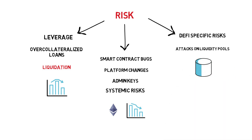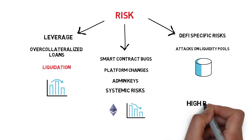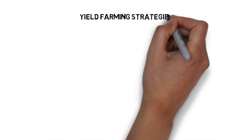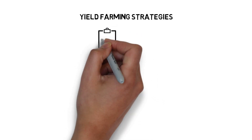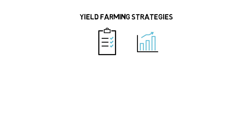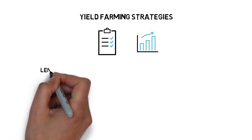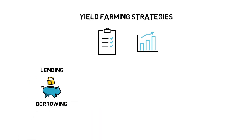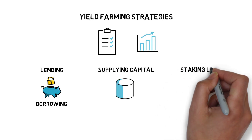All of these risks put together are yet another reason why yield farming returns are so lucrative — it's a high risk, high reward game. Yield farming strategies are sets of steps that aim at generating a high yield on capital. These steps usually involve at least one of the following elements: lending, borrowing, supplying capital to liquidity pools, or staking LP tokens.